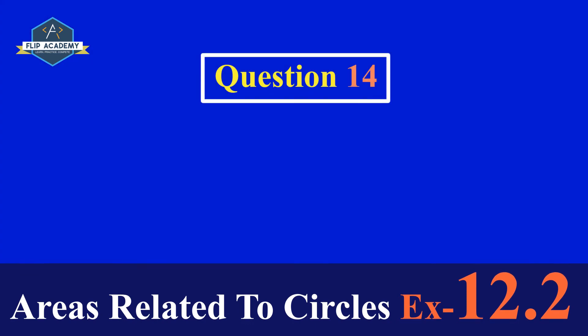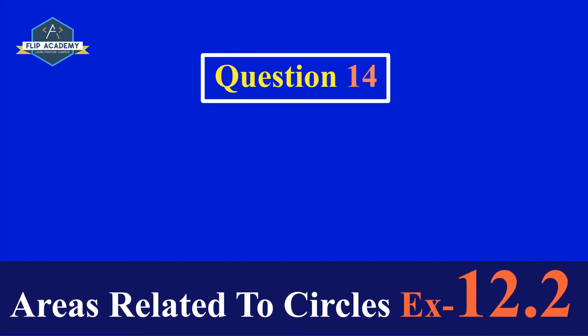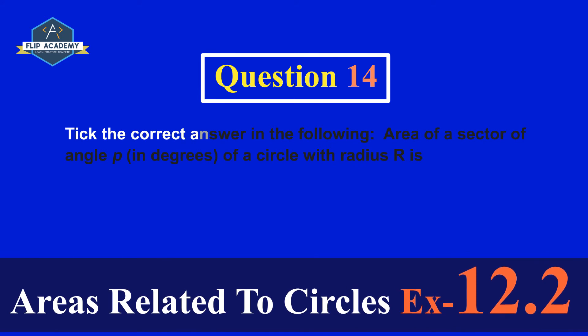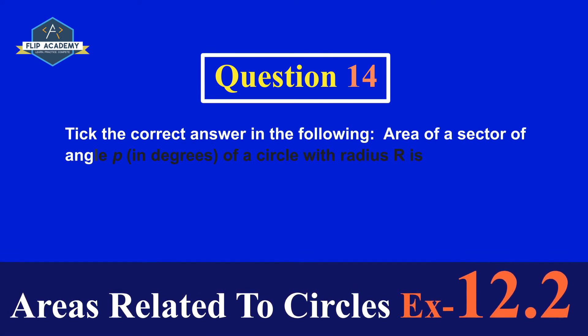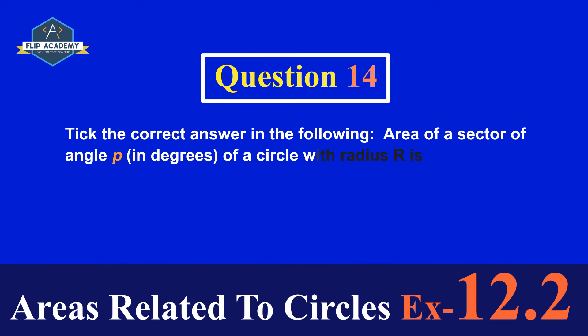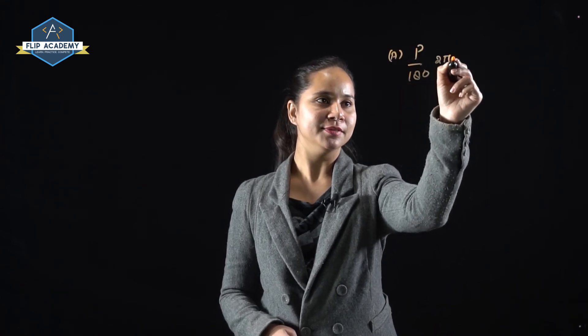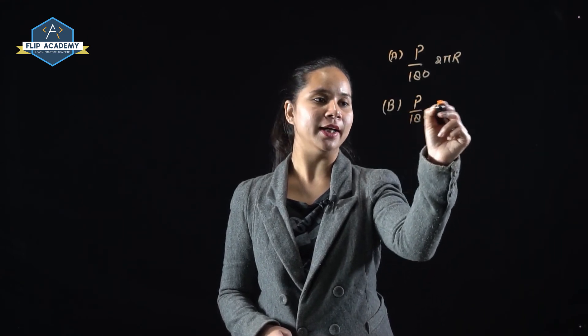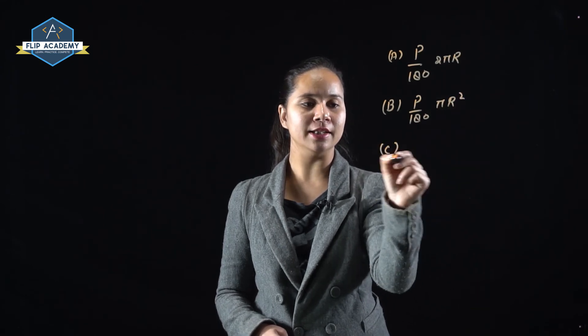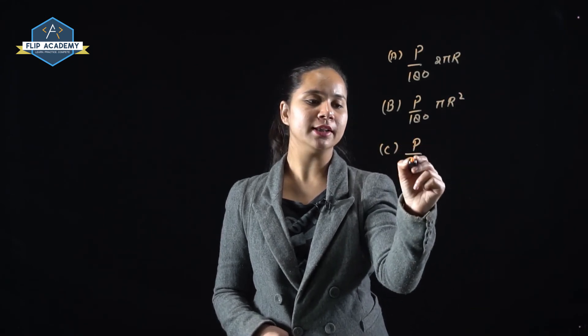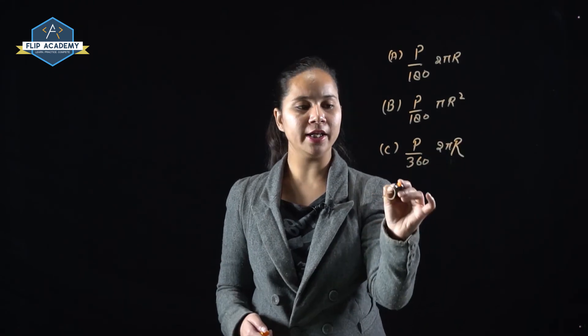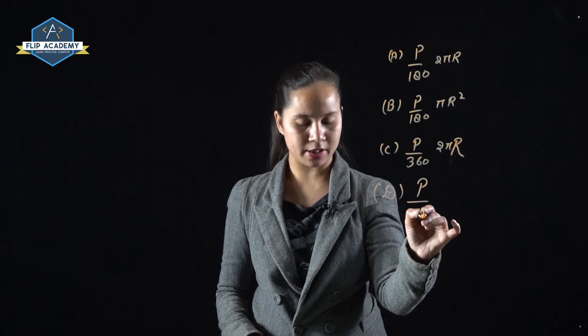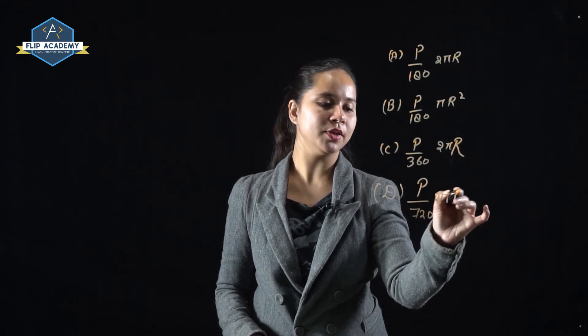Now, Exercise 12.2, Question No. 14. Choose the correct answer: The area of a sector of angle P (in degrees) of a circle with radius R is — Option A: P/182 × πR; Option B: P/180 × πR²; Option C: P/362 × πR; Option D: P/720 × 2πR².